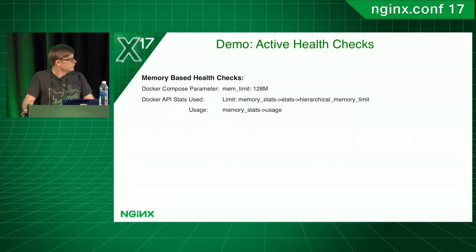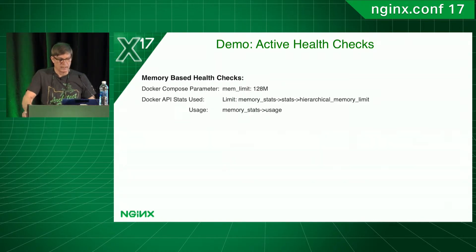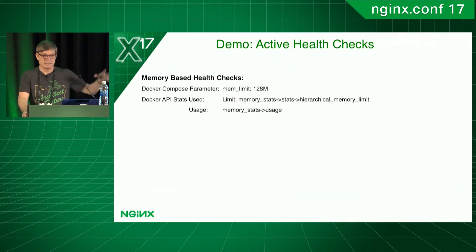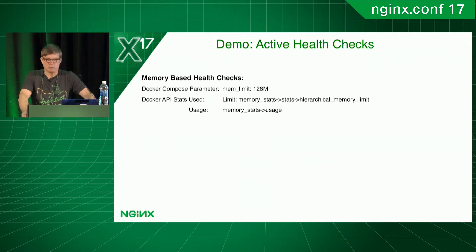For the memory check, it's a little different. I'm limiting each container to 128 megs — Docker makes this easy. I get the data from the Docker stats API to tell me how much memory it's using. I chose 70% as my threshold. If usage goes above 70%, it marks the container unhealthy. When it goes below 70%, it becomes healthy again.